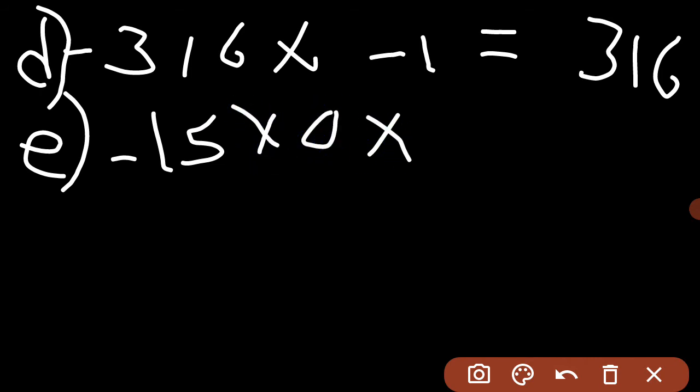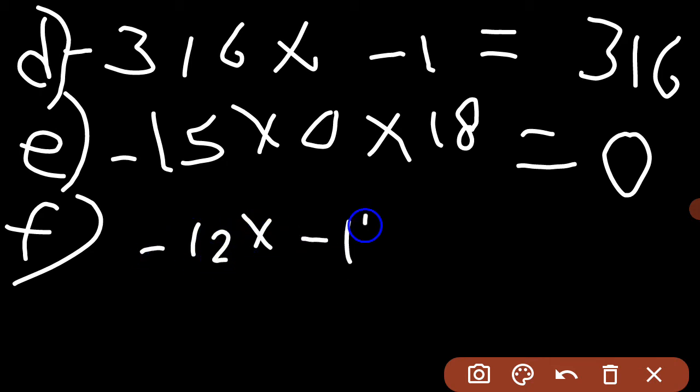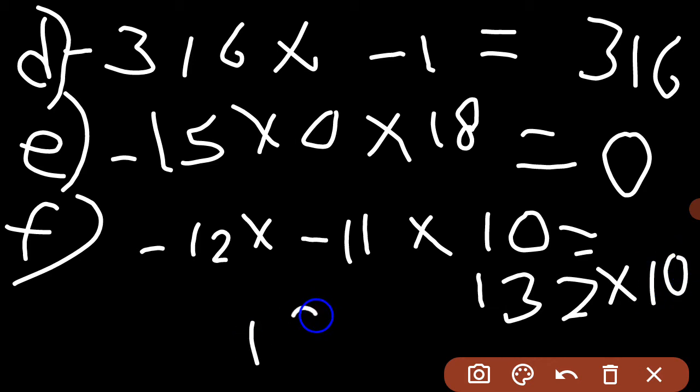Part F: minus 12 into minus 11 into 10. There are two negative numbers. If you multiply them, 12 into 11 equals 132, so 132 into 10 equals 1320. This is Part F.